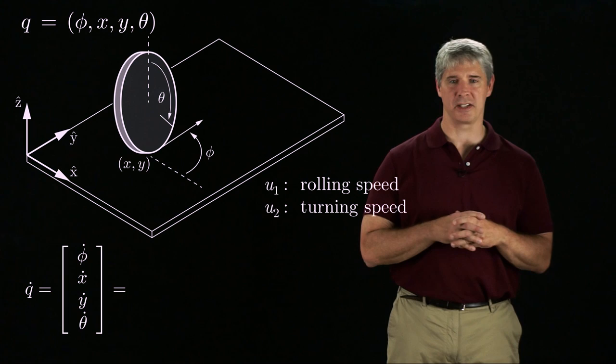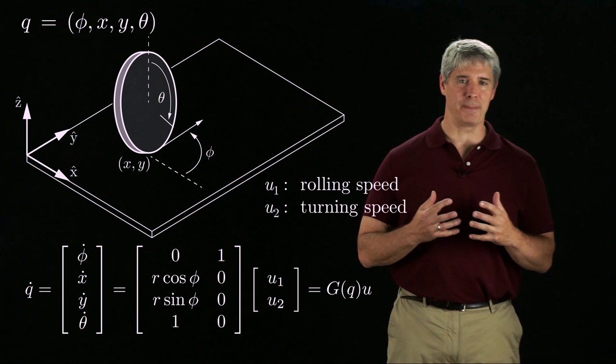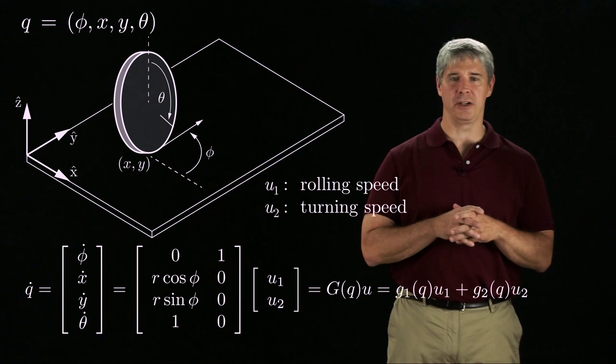With these controls, the rate of change of the coordinates can be expressed as a configuration-dependent matrix times the controls, where the configuration-dependent matrix is called G of Q.